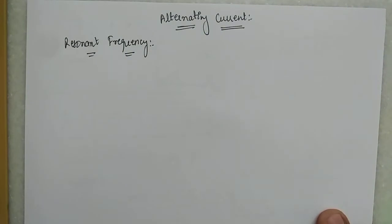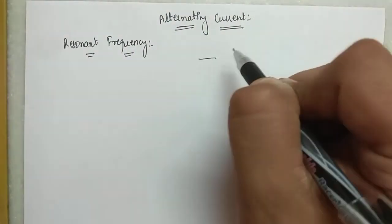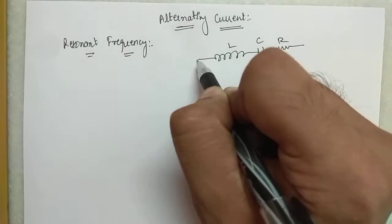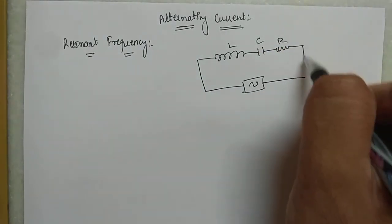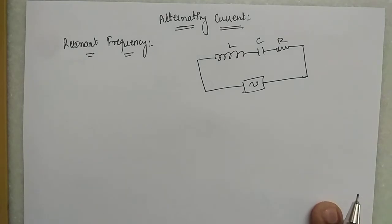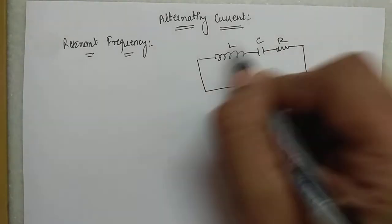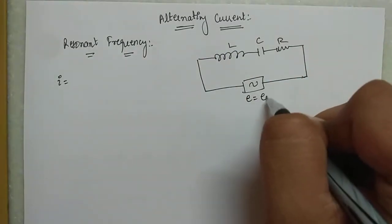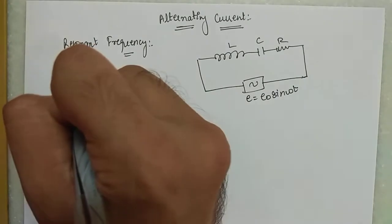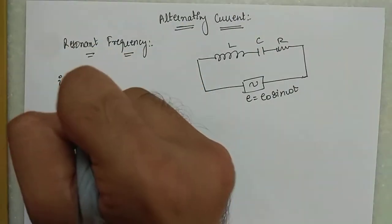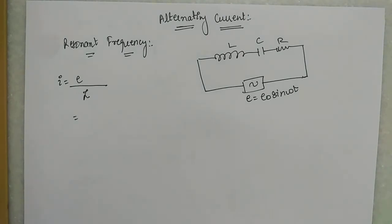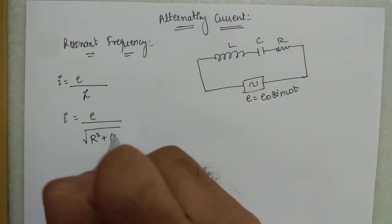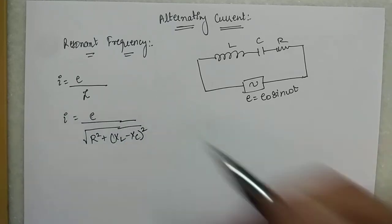Let's try to understand what resonant frequency is. If you have a series LCR circuit with a capacitor and a resistor R, connected to an AC source, the current in the circuit will be equal to E divided by Z, where Z is the total impedance. So current equals E divided by the square root of R² plus (X_L minus X_C)².